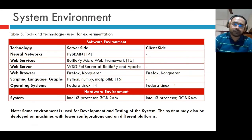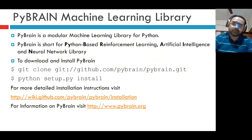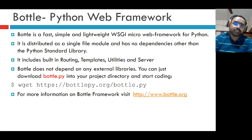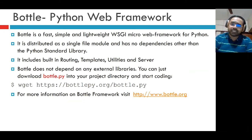To develop this system, we used the PyBrain package, the Bottle microframework, and the Apache web server. The scripting language is Python, along with NumPy and Matplotlib packages. PyBrain is a modular machine learning library for Python — short for Python-Based Reinforcement Learning, Artificial Intelligence, and Neural Networks. Bottle is a fast, simple, lightweight WSGI microframework for Python distributed as a single file module with no dependencies other than the Python standard library. It includes built-in routing, templates, utilities, and server — you can just download bottle.py into your project directory and start coding.